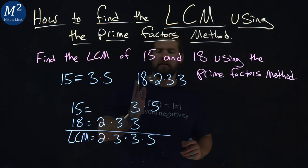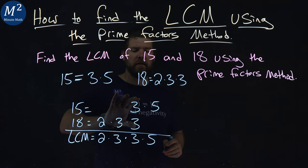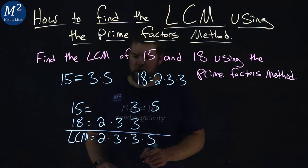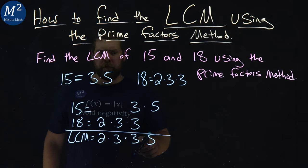Notice how I'm being multiplied though. Lined up. If it's duplicated, we just bring only 1 down. 2 times 3 times 3 times 5.